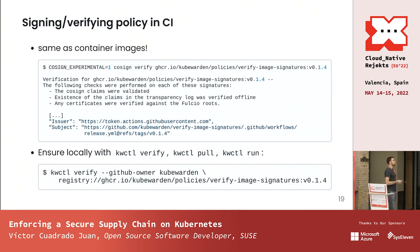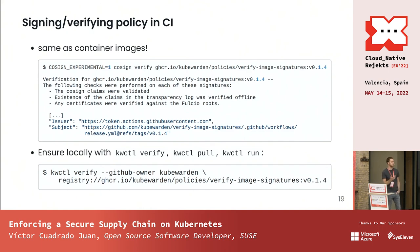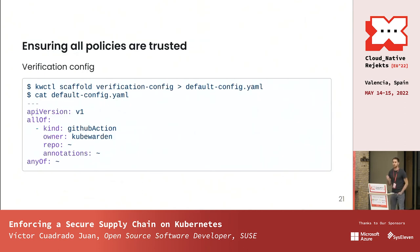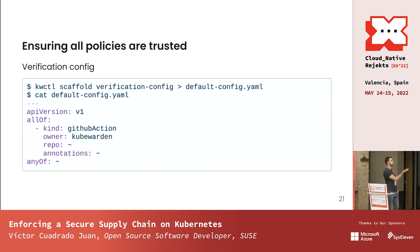With a specific example — how do you sign and verify a policy in CI? You do the same as before and check the subject. In the case of Kubewarden, you can verify locally with a tool called KWCTL, which can run the policy outside the cluster. For all Kubewarden policies we have a hub where you can submit your own — signed policies are marked as such in the hub. Now you have your policy, it's been signed just like a container image. You then configure Kubewarden to check those. With KWCTL you can get a default config that validates and trusts all the Kubewarden policies.